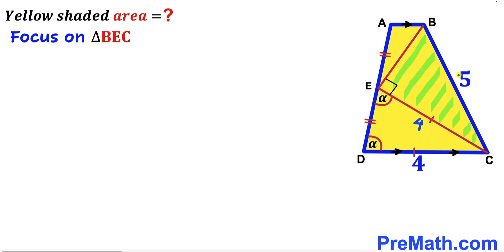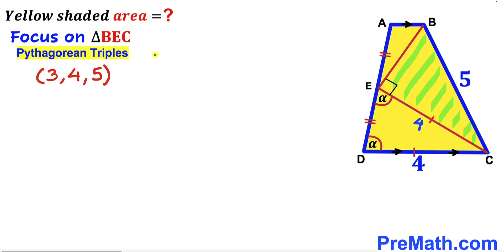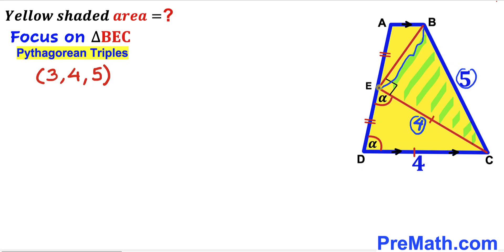Now we focus on right triangle BEC, whose known side lengths are 4 and 5, and one side is unknown. Recalling the Pythagorean triplet 3-4-5, in triangle BEC this side length is 4 and this side length is 5, so therefore side BE must be 3 units.